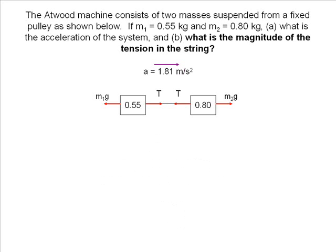Next, we want to find the tension in the string. We know the entire system accelerates at 1.81 meters per second squared, so each individual part of the system is accelerating at this rate. To find the tension, we want to isolate one of the masses and treat it as its own system.